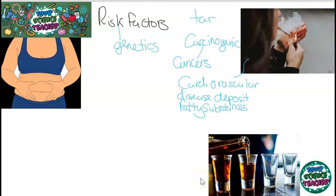In addition to this, smokers often have respiratory problems, meaning they struggle to breathe. That's because cigarette smoke contains a substance called carbon monoxide, and carbon monoxide gets carried around by the blood. In the end, your blood carries around 10% carbon monoxide instead of oxygen. This is why smokers often have shortness of breath and a cough.